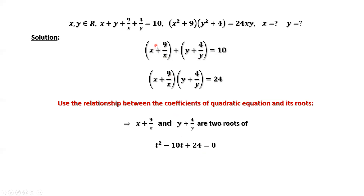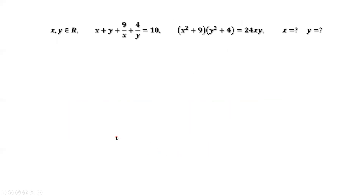We don't know exactly what the two numbers are, but we can solve this quadratic equation to find the two roots. Factoring the left-hand side, we have t minus 4 times t minus 6 equals 0. We find the two roots: one is 4, one is 6. But we don't know which one is which.